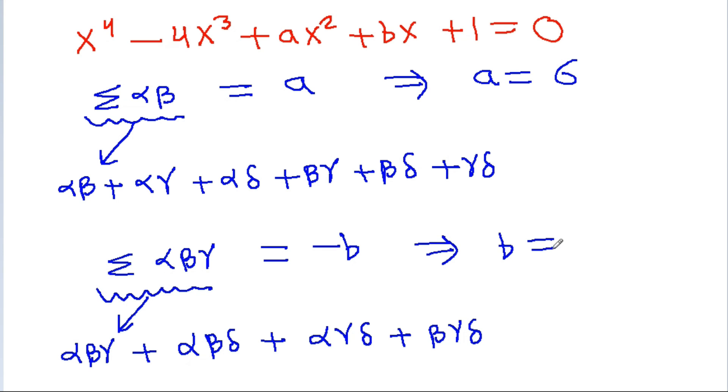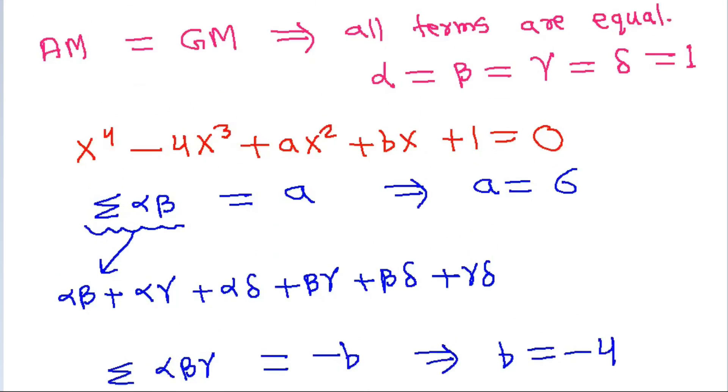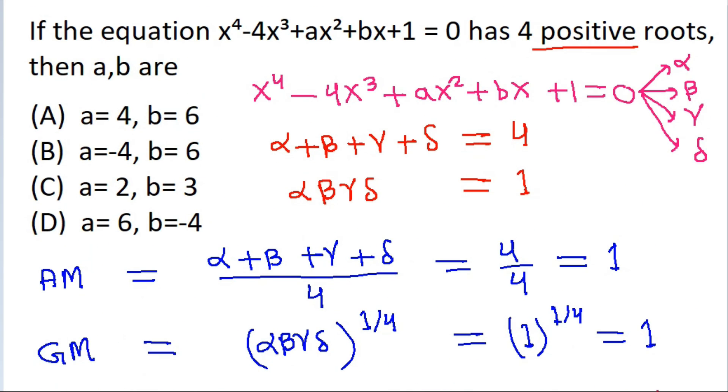We get b = -4. So the correct option is option D.